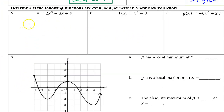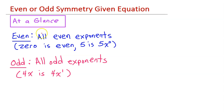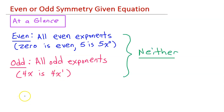For the next few problems, we need to determine if the functions are even, odd, or neither. We're not talking about degree — we're talking about symmetry. At a glance, a polynomial is an even function if all the exponents are even, including 0, which is even. So a constant like 5 is really 5x to the 0 power — an even exponent. A function is odd if all the exponents are odd; for example, 4x is really 4x to the 1 power. If we see a mixture of even and odd exponents, the polynomial is neither even nor odd.